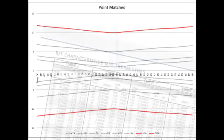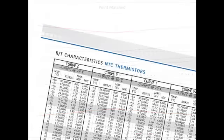To find the tolerance at other points, you will need a resistance versus temperature table. There are different tables for each curve.